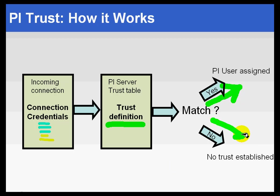If we don't match, we go to the next step. If it's an incoming client like ProcessBook or DataLink, the user will see a connection dialog box and be prompted for a username and password. Typically we set up trust definitions so that interfaces can connect without a user password prompt.